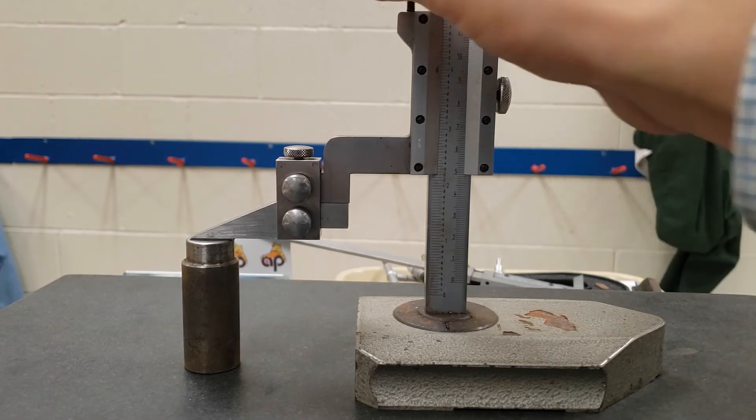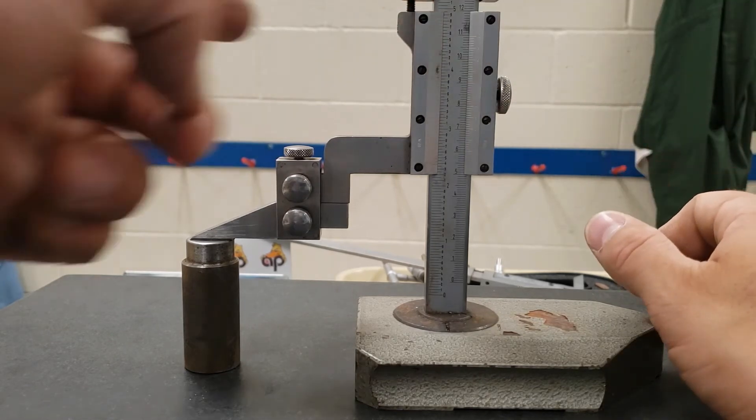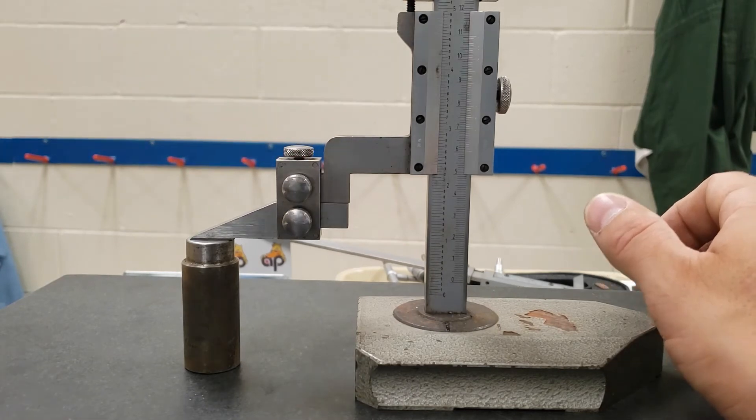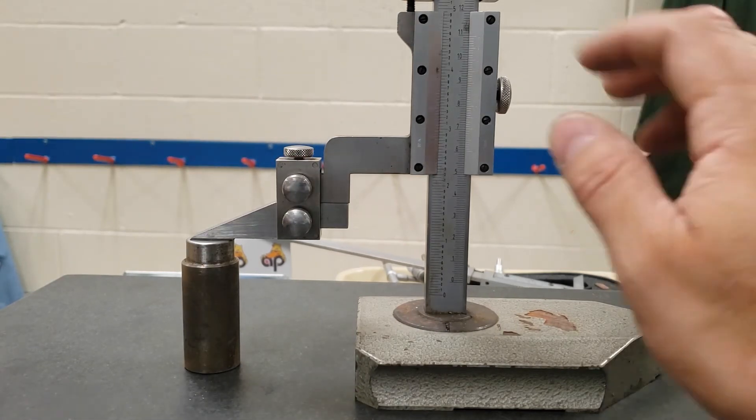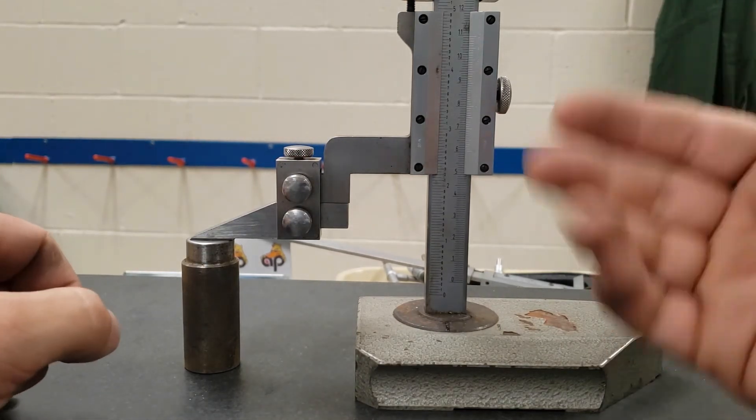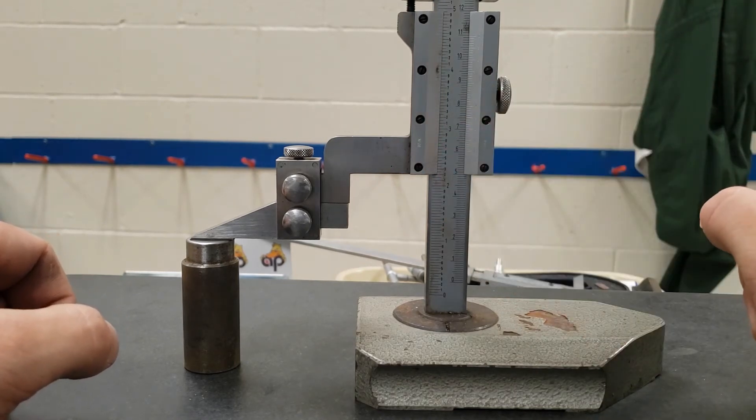Lightly use your thumb and when it stops, like it stopped now, I'm barely touching it, that's where you want to be. And then you will take your reading off the vernier gauge.